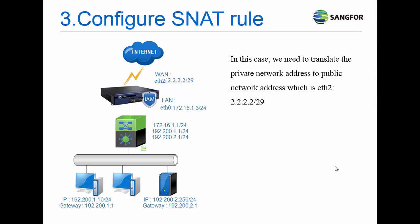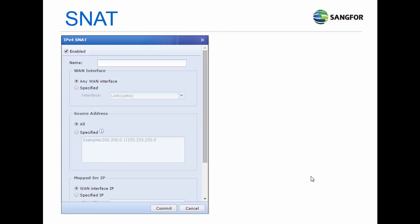In this case, we need to translate the private network address to the public network address, which is the WAN IP 2.2.2.2/29. Before configuring SNAT, I would like to briefly explain the SNAT fields in IAM.